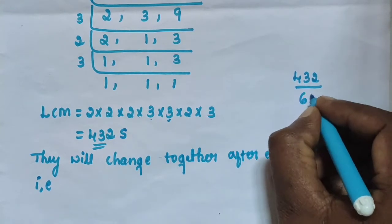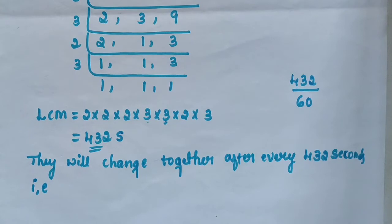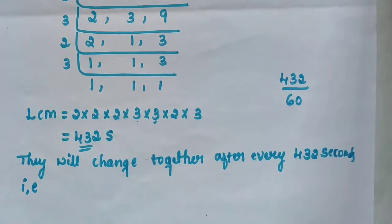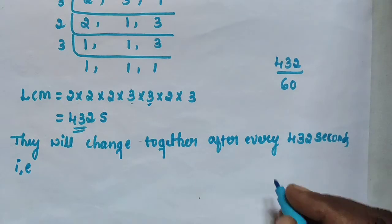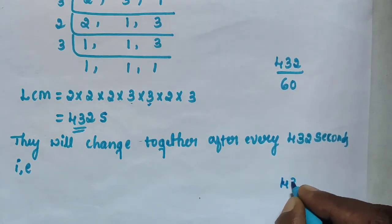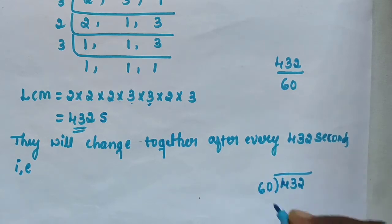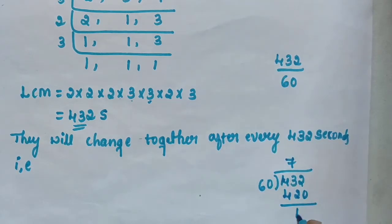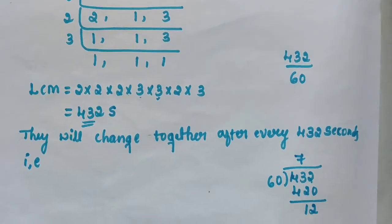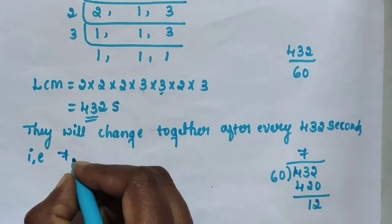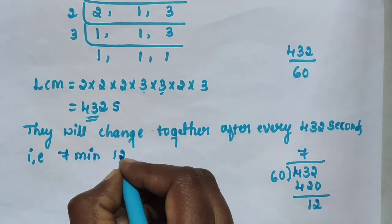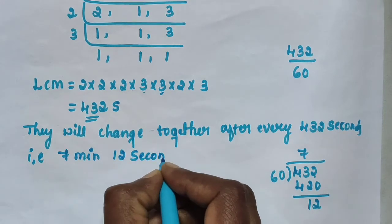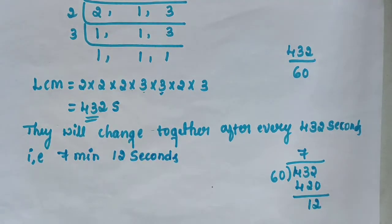432 ÷ 60: 6 × 7 = 420, remaining 12. So 432 seconds = 7 minutes 12 seconds. They will change simultaneously after 7 minutes 12 seconds.